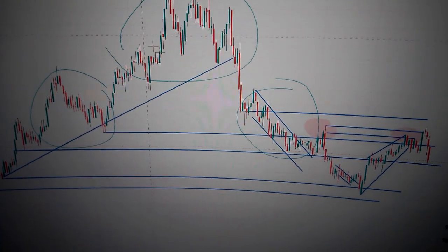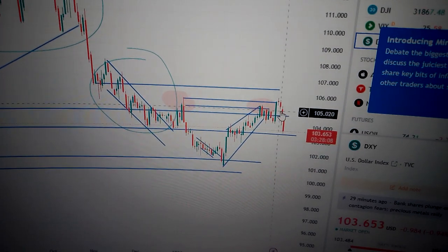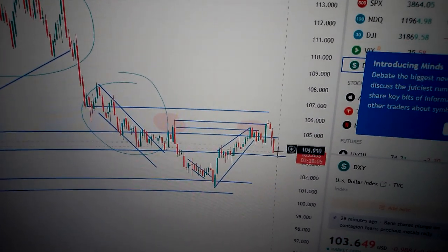And then the head and shoulders pattern will be invalidated by this reversal. But actually we didn't form the higher high here. So it means we're still in a downtrend.